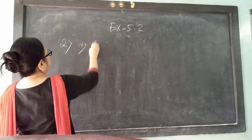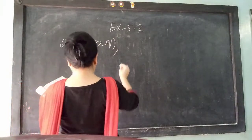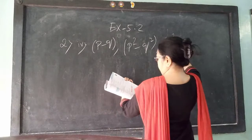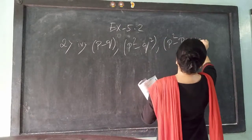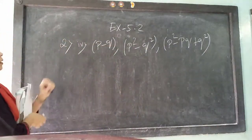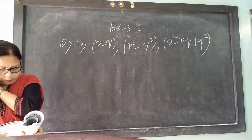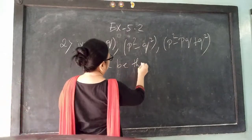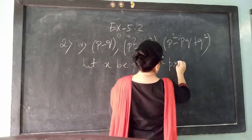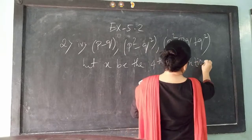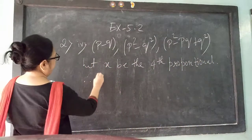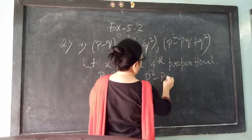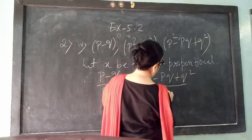So I am doing sum number 4. This is the academic part. Given: p minus q, p squared minus q squared, and p squared minus pq plus q squared — there are three terms. You have to calculate the fourth proportional. So let x be the 4th number. Therefore we can write: p minus q by p squared minus q squared equals p squared minus pq plus q squared by x (the unknown term).